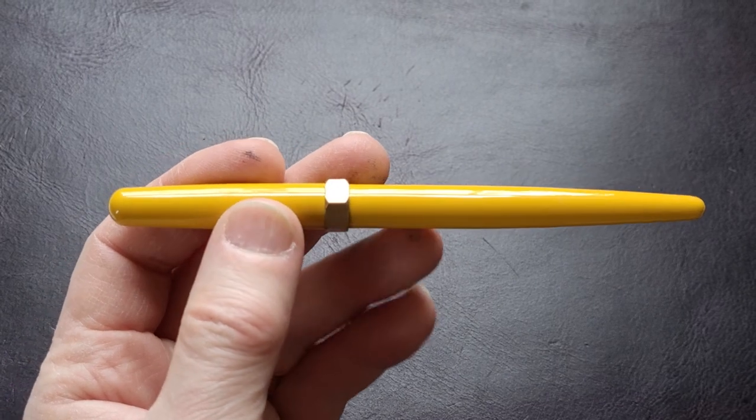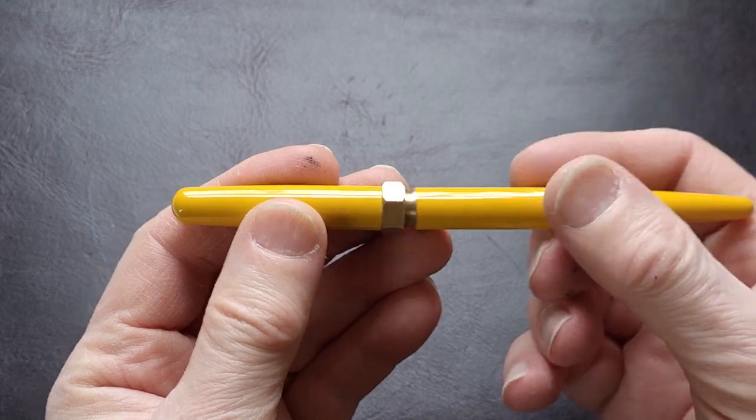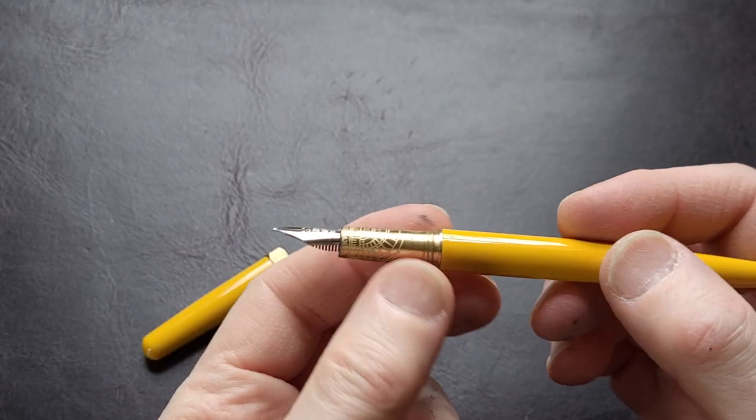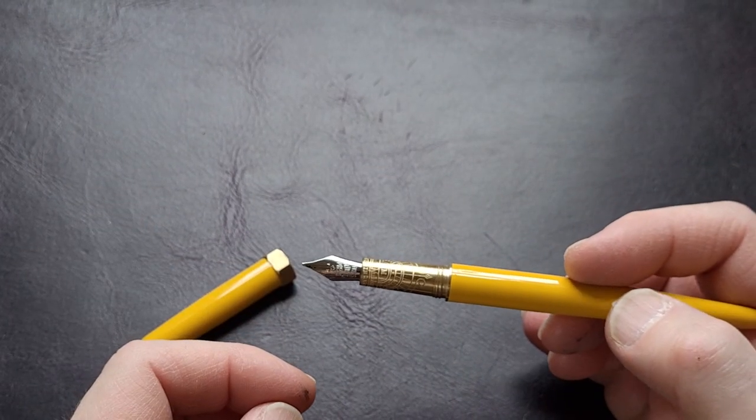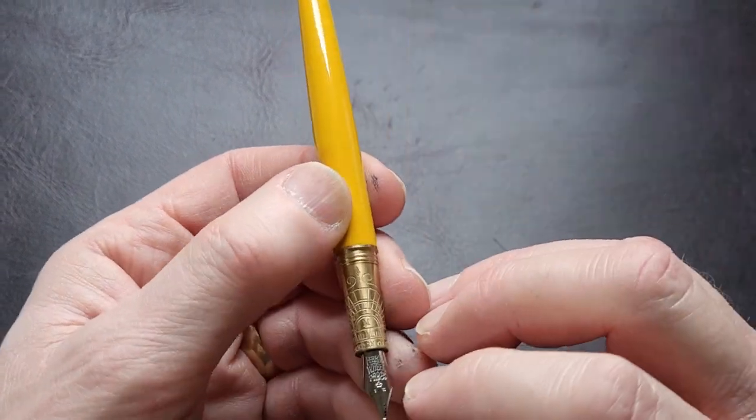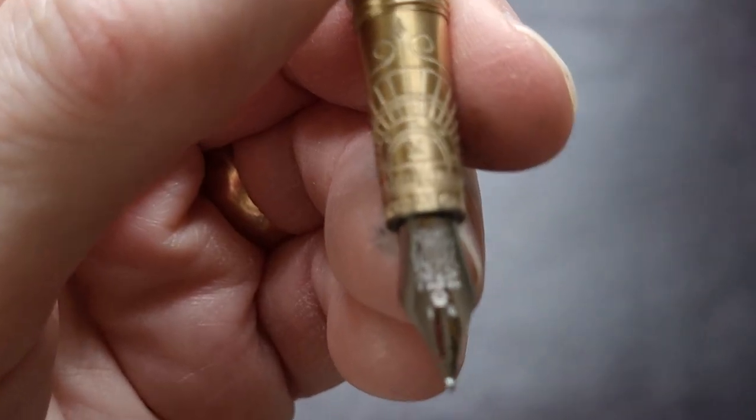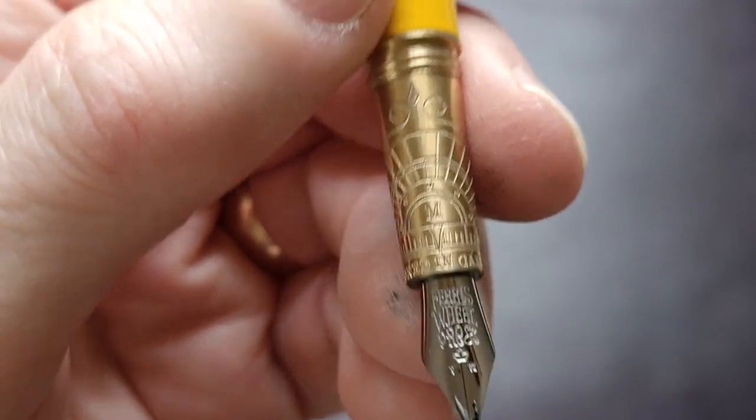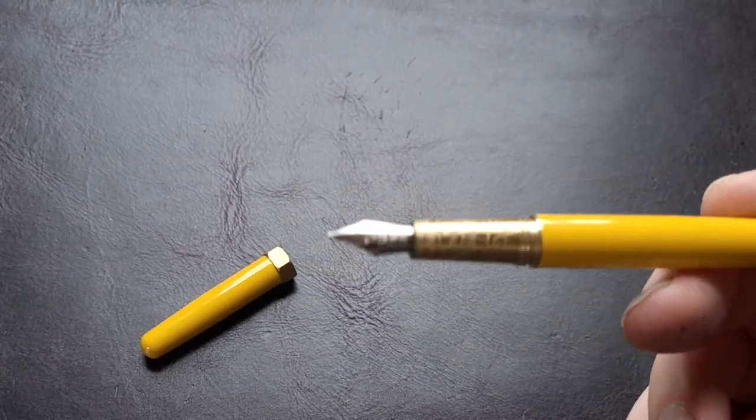You unscrew it and you have this really quite beautiful brass section here and it has a steel nib. On the nib it says Ferris Wheel Press and there's a little Canadian maple leaf right on the end which is kind of nice because it's a Canadian company. Ferris Wheel is very well known for its inks actually, its inks are becoming one of the defining products of the company.